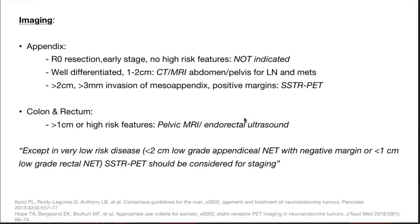For colon and rectum: any tumor more than 1 cm in size or higher grade should have pelvic MRI or endorectal ultrasound. Except in very low-risk diseases — tumors less than 2 cm, low grade with negative margin, or less than 1 cm low-grade rectal NETs — Gallium-68 DOTA PET-CT should be considered for staging.